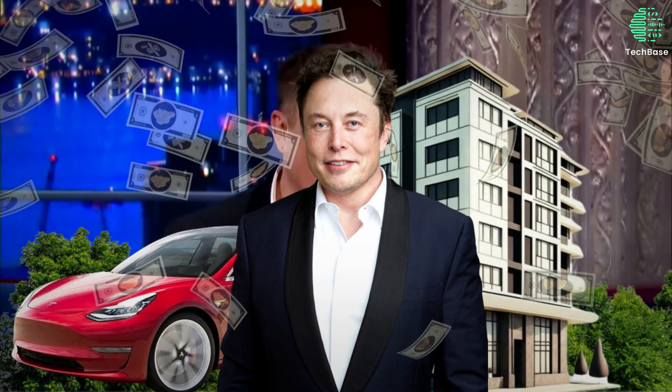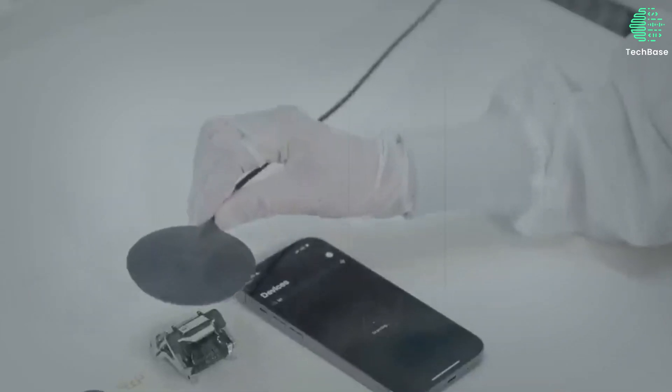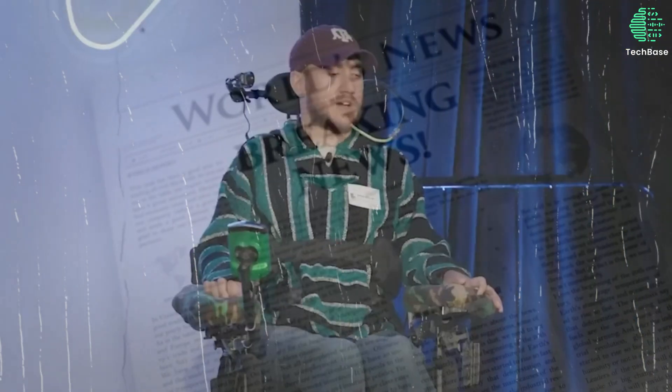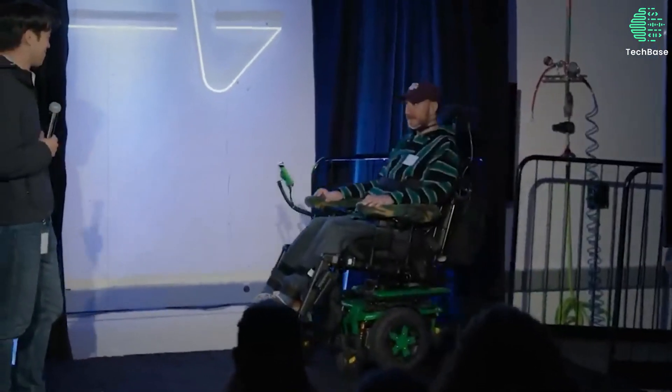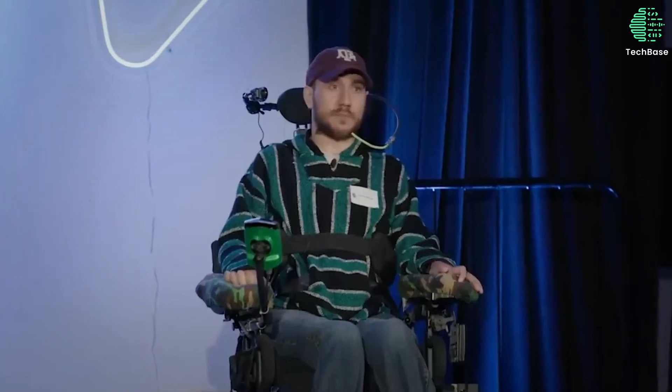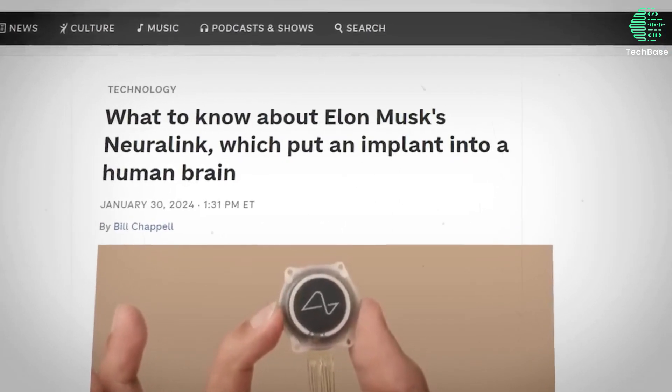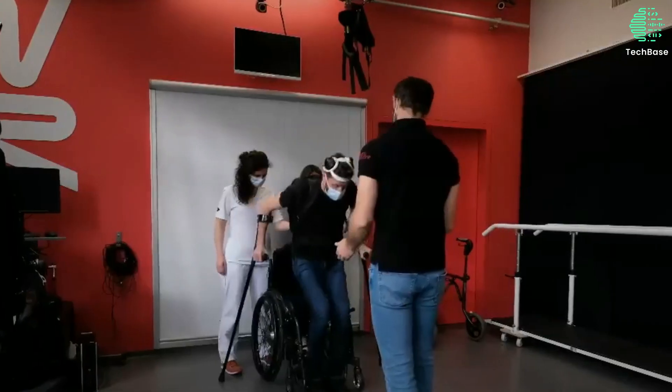Neuralink, the brainchild of entrepreneur Elon Musk, has captured the world's attention with its groundbreaking advancements in neurotechnology. After years of rigorous research and testing, Neuralink recently made headlines by revealing its first human patient, Noland Arbaugh, who received the company's brain chip implant. This milestone marks a significant leap forward in the field of neurotechnology, promising hope and possibilities for individuals with severe paralysis.